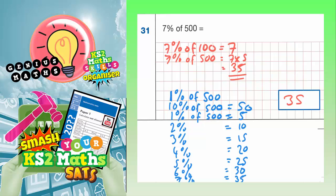So another way of saying that is that if 1% of 500 is 5, 7% is going to be 7 lots of that. So 7 lots of 5, which again is 35.